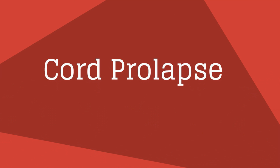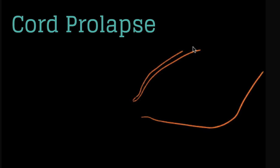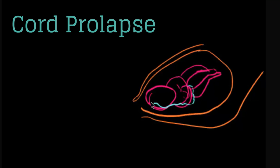The second obstetrical emergency that we will now discuss is cord prolapse. This is when the umbilical cord descends in advance of the fetal presenting part. Here is the fetus and the blue umbilical cord that is prolapsed through the cervix.